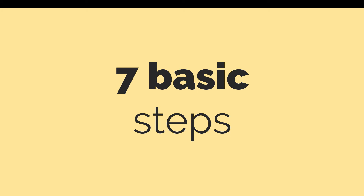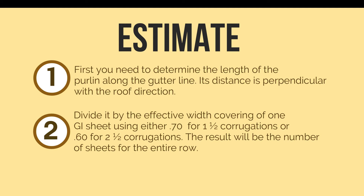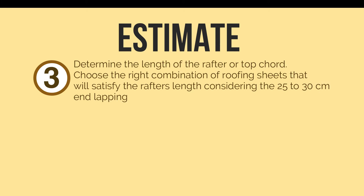Step one: determine the length of the purlin along the gutter line — its distance is perpendicular with the roof direction. Step two: divide that length by the effective width covering of one GI sheet, using either 0.70 for one and a half corrugations or 0.60 for two and a half corrugations. The result will be the number of sheets for the entire row. Step three: determine the length of the rafter or top cord, then choose the right combination of roofing sheets that will satisfy the rafter's length, considering the 25 to 30 centimeters end lapping.